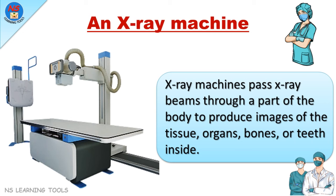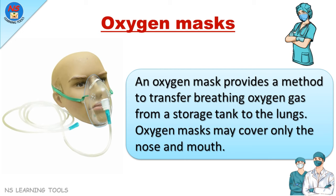An X-ray machine. X-ray machines pass X-ray beams through a part of the body to produce images of the tissue, organs, bones, or teeth inside. Oxygen masks. An oxygen mask provides a method to transfer breathing oxygen gas from a storage tank to the lungs. Oxygen masks may cover only the nose and mouth.